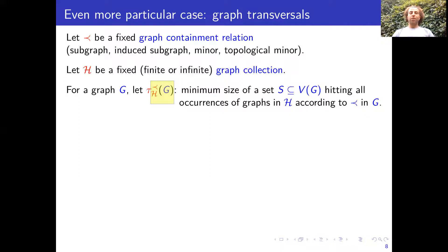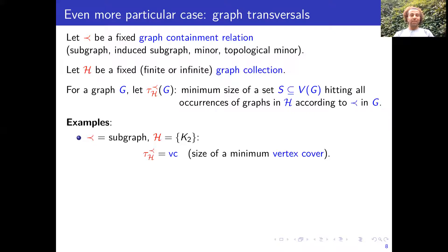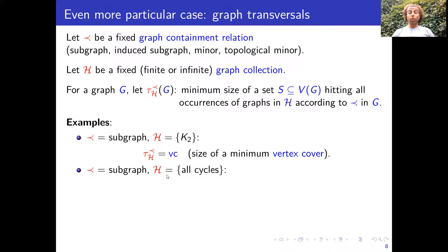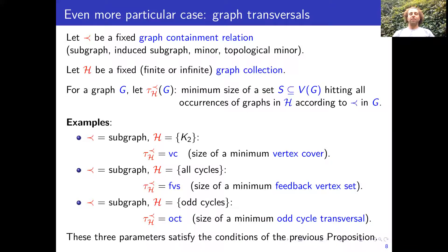This parameter is the minimum number of vertices such that when removed from the graph, the remaining graph does not contain any of the graphs in H according to this relation. Let's see some examples. If we consider the subgraph relation and H contains just one edge, we want to hit all edges by removing vertices — this parameter is exactly the vertex cover number. If we want to hit all cycles, this is the minimum feedback vertex set. If H contains all odd cycles, this is the odd cycle transversal.